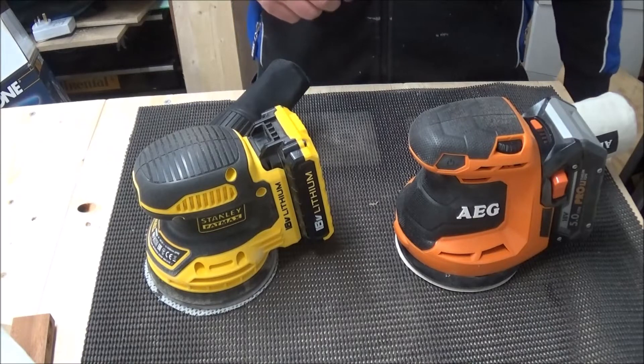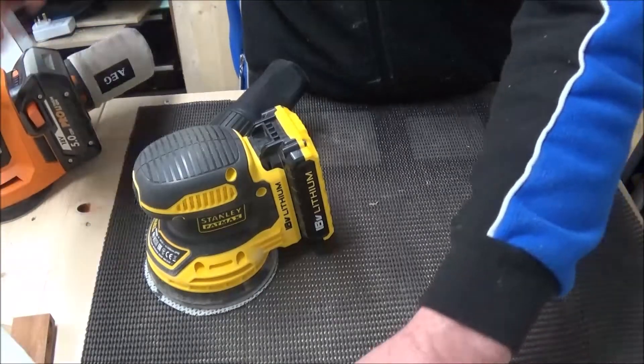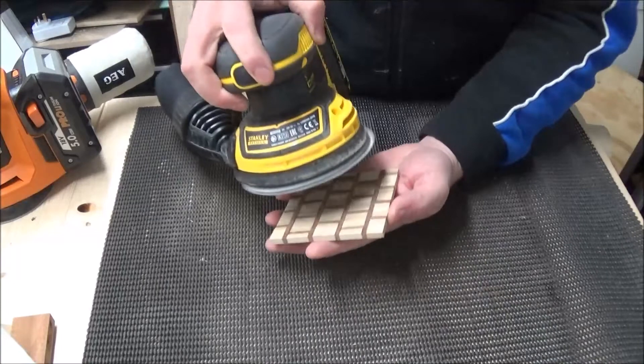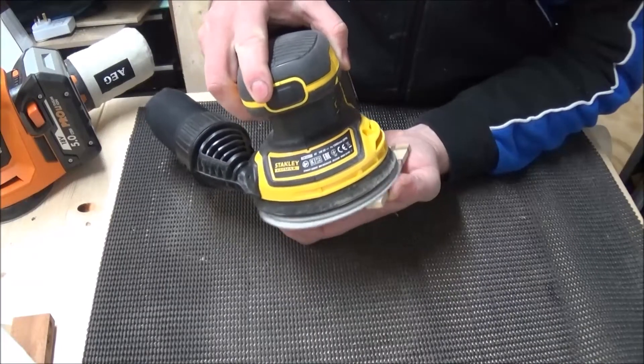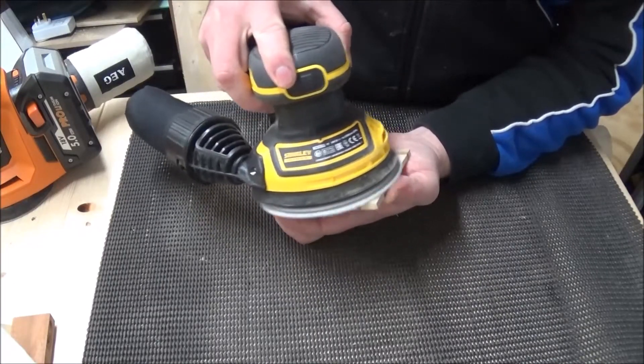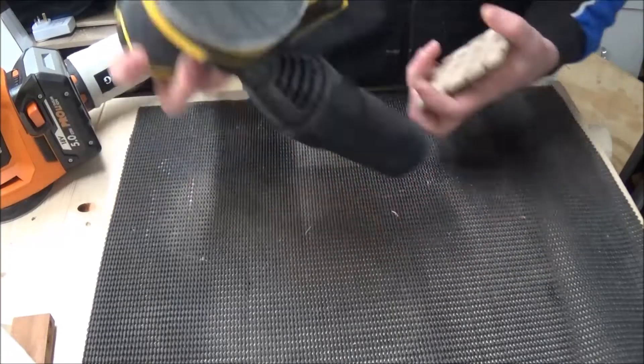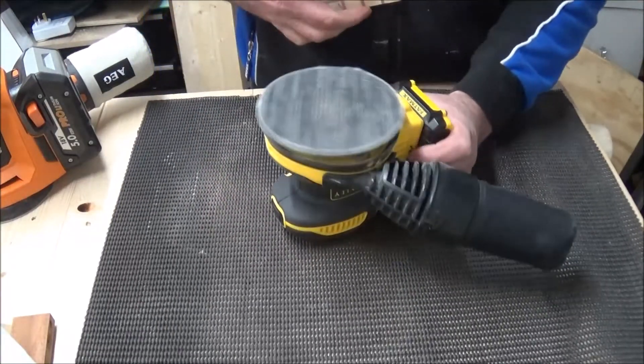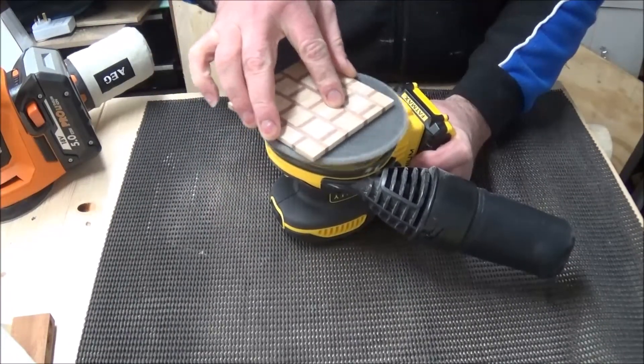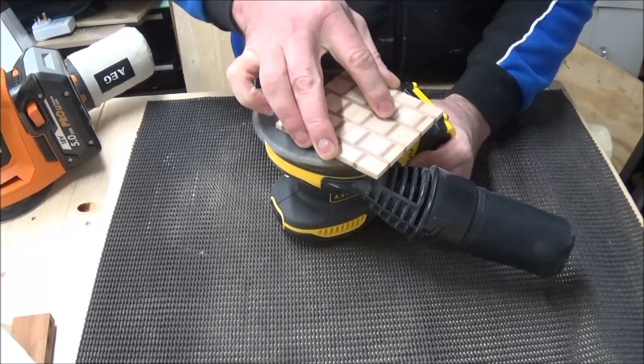This gave me a good opportunity to use my two new cordless random orbital sanders. I used the Stanley Fatmax sander first with 80 grit paper on. I really like this sander. It's only got a 2 amp hour battery but it did really well.